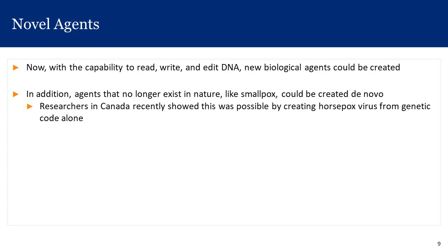One of the double-edged swords of bioengineering is that with the capacity to genetically re-engineer various agents, those who would want to exact harm could re-engineer known agents to have new clinical presentations we haven't seen before. Additionally, agents that no longer naturally exist, like smallpox, which was eradicated decades ago, could theoretically be created de novo. Researchers in Canada recently showed this was possible by creating horsepox virus from genetic code alone. We must be vigilant about bioengineering, which has enormous benefits but could be misused.